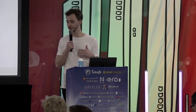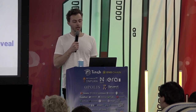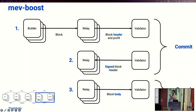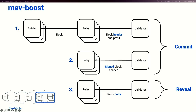So how did we manage this with MEVboost? It's a three-step process, and it introduces a new entity called a relay, used as a privacy and commitment device by both builders and validators. First, the builder sends their block to a relay, which simulates the block to make sure it is valid and profitable, and reports out to the validator with a block header showing a certain profit. The validator sees a bunch of block headers and signs the most profitable one, returning that to the relay. The relay then knows the validator has committed to including this block because they signed the header, and can safely reveal the block body. It's a simple two-phase commit-reveal scheme that helps builders and validators permissionlessly collaborate together.